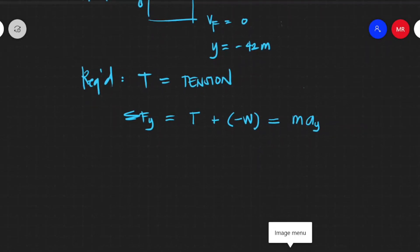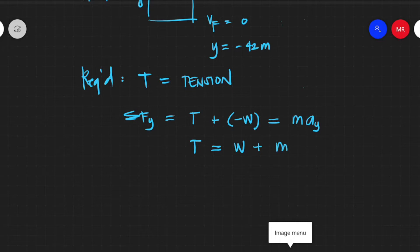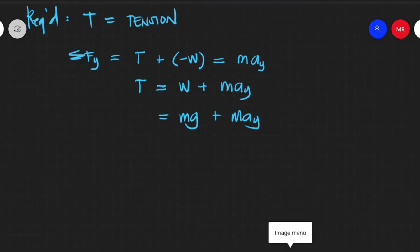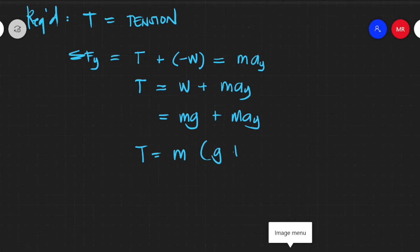So this is now the equation we have to consider. Therefore, tension equals weight plus mass times acceleration y. Since weight equals mass times gravity, tension equals mass times gravity plus mass times acceleration y, which simplifies to tension equals mass times the quantity gravity plus acceleration y.